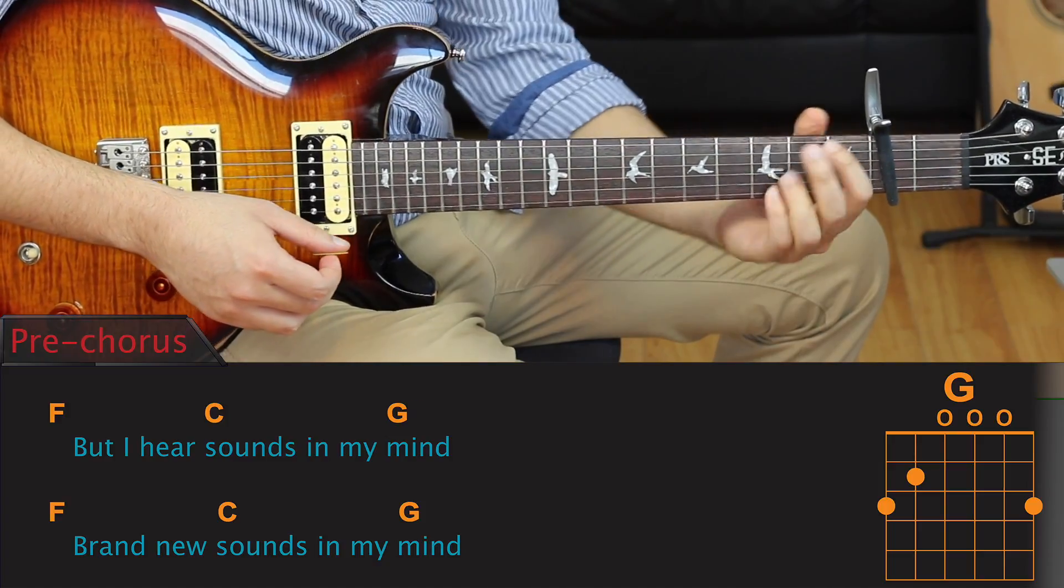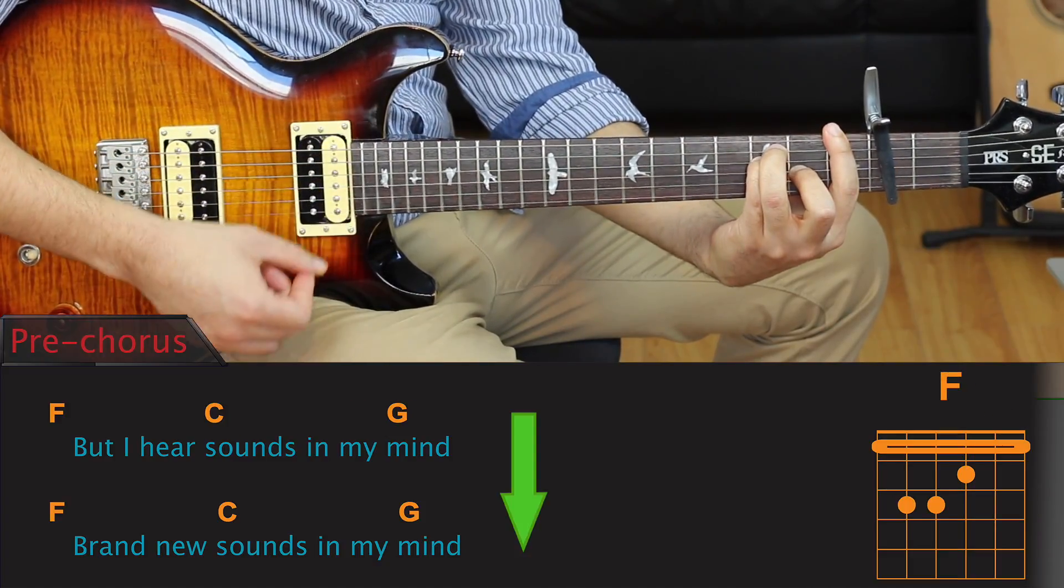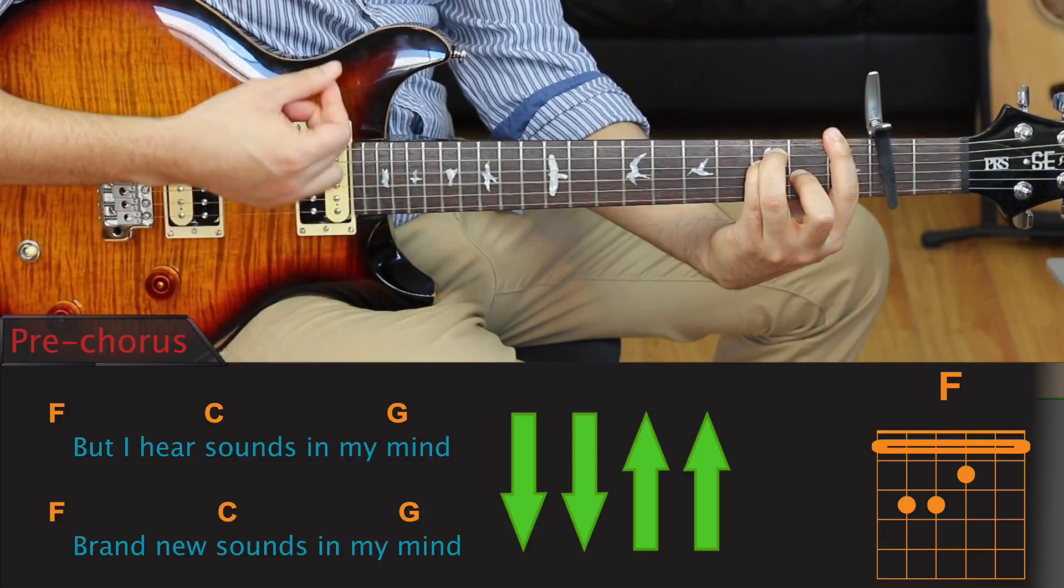The F and the C chord are strummed with the following pattern: down, down, up, up, down, up.